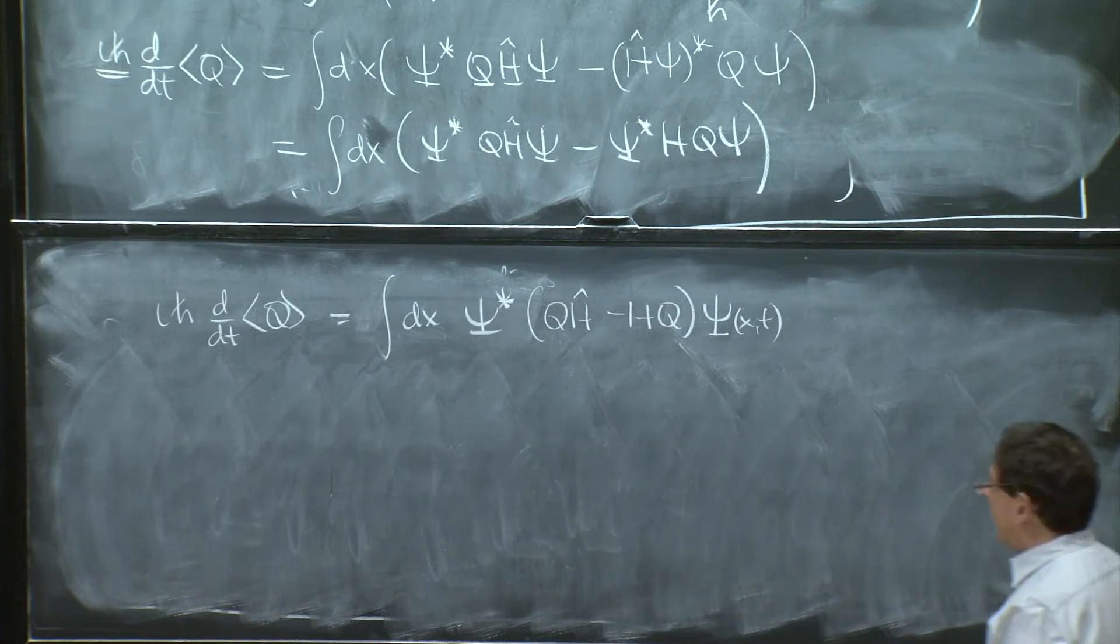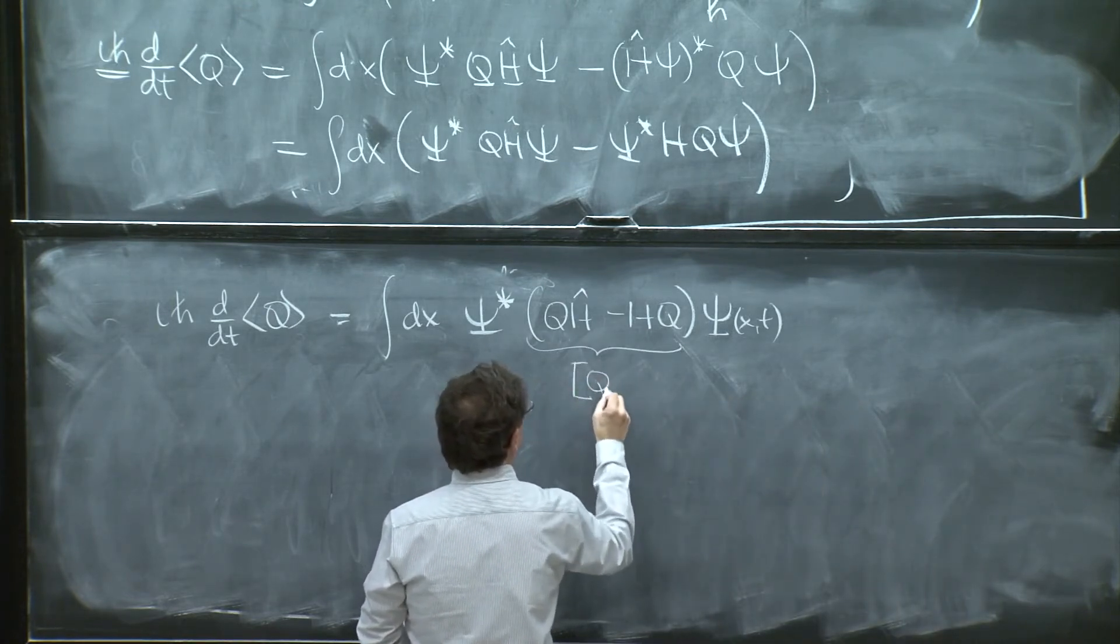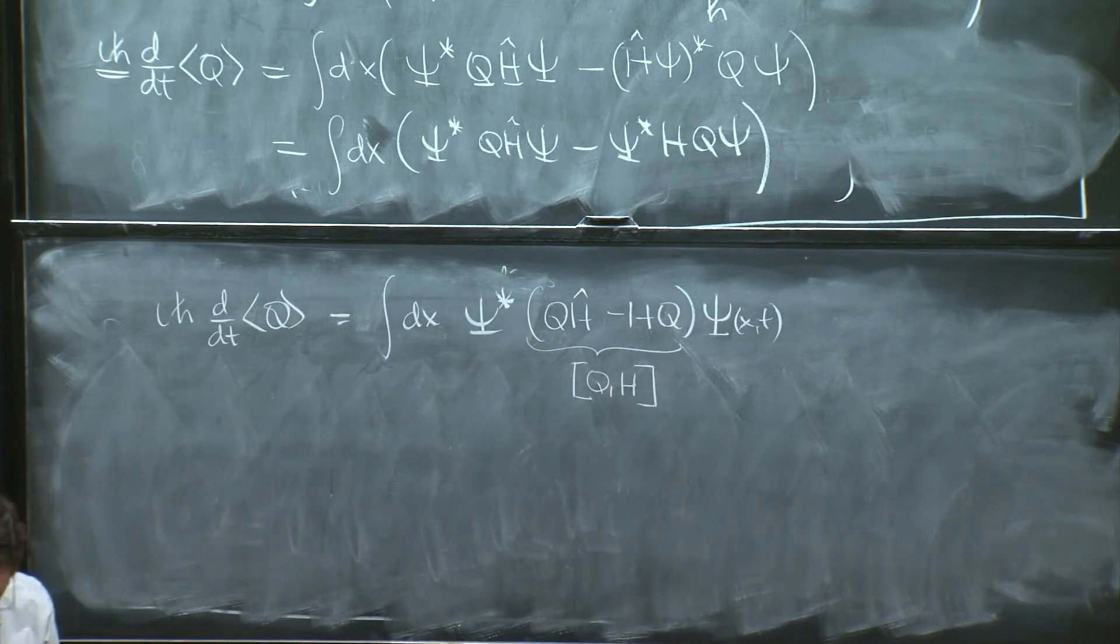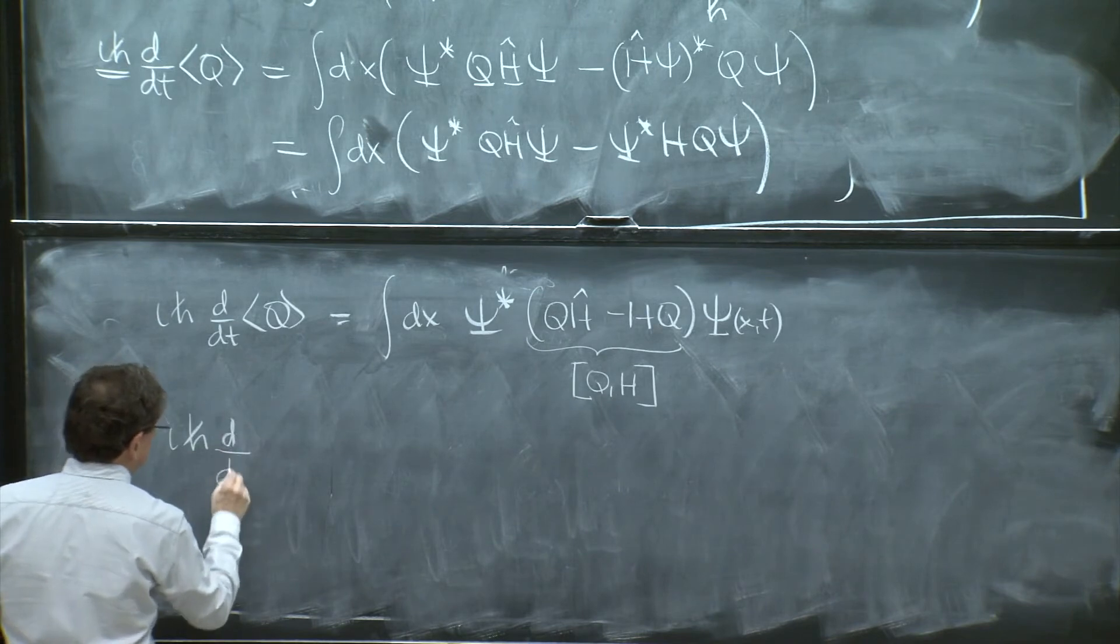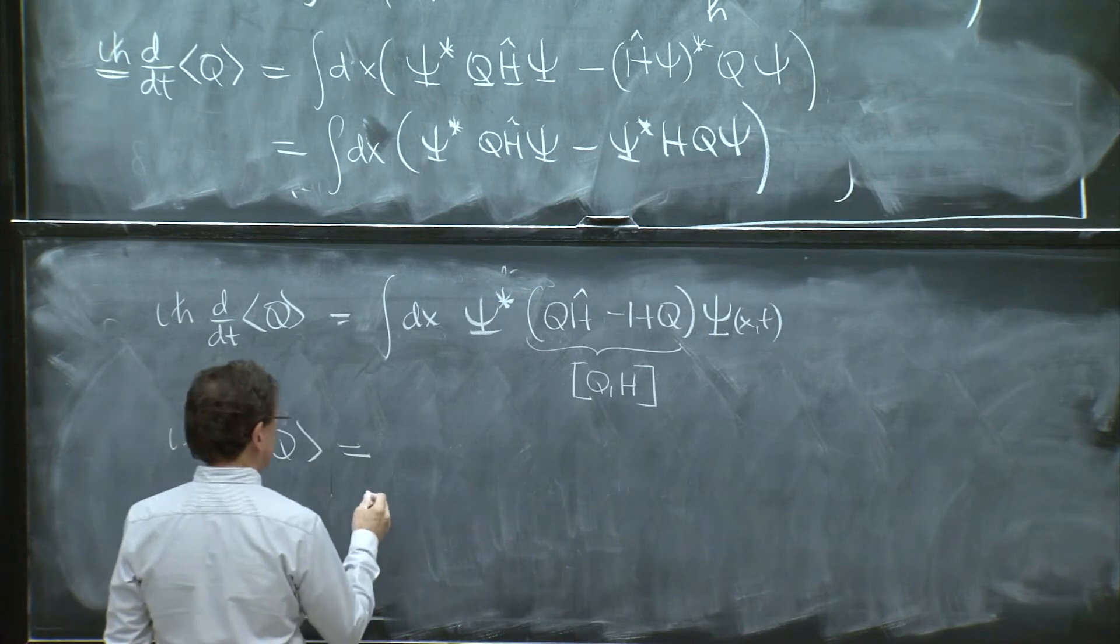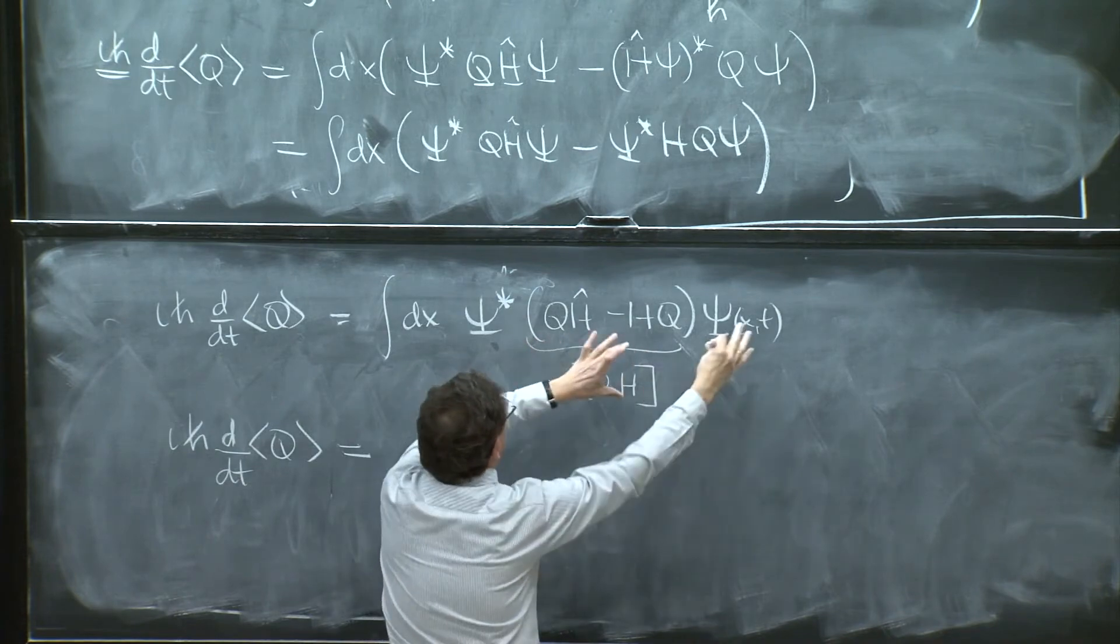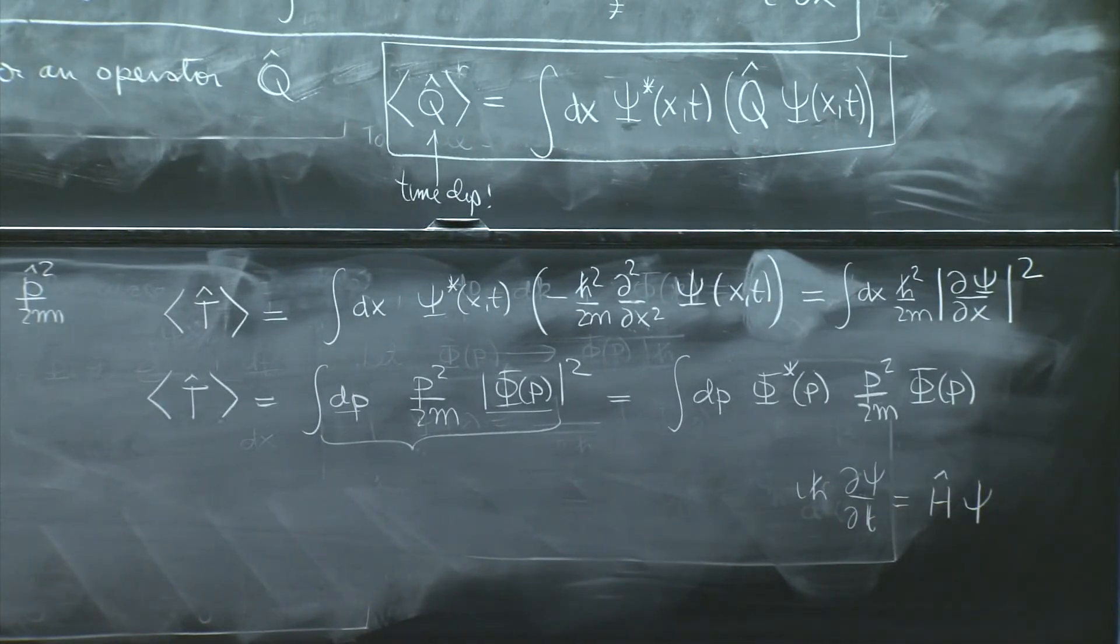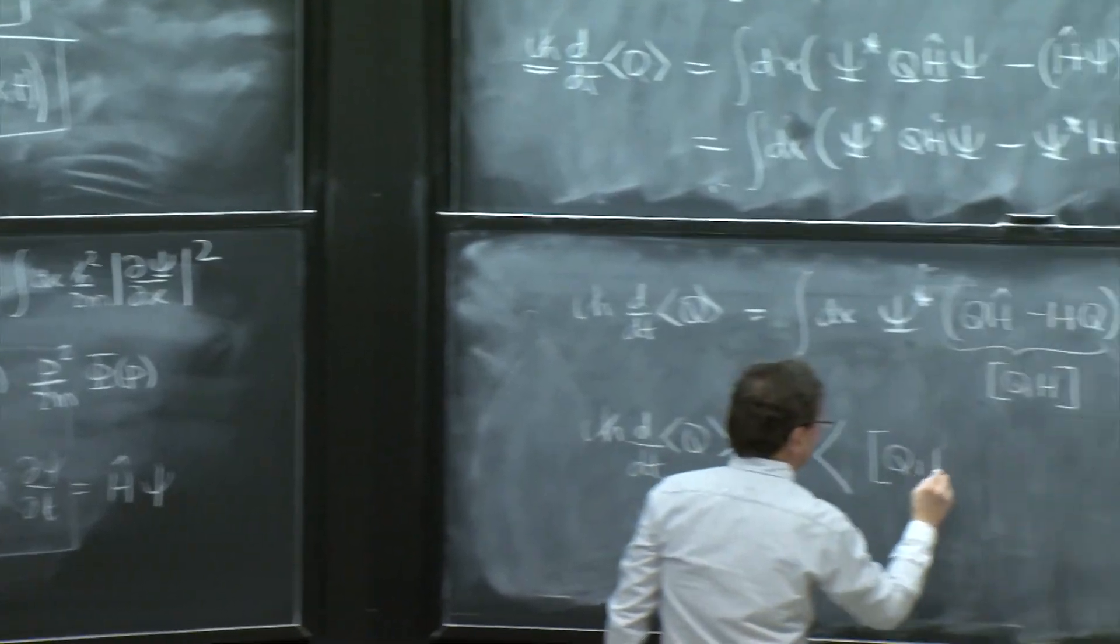So what do we have here? Well, this is nothing else but the commutator of q and h. So our final result is that i h bar d dt of the expectation value of q is equal to, look, it's the expectation value of the commutator. Remember, expectation value for an operator, the operator, of the thing here, so this is nothing else than the expectation value of q with h.